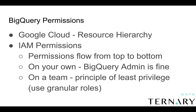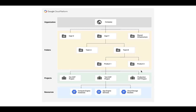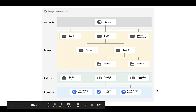Permissions flow from top to bottom. If you have a permission that's applied at the organization level, that permission will flow down through all folders, through all projects, to all resources.